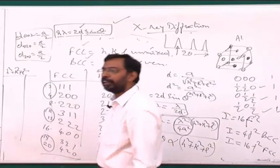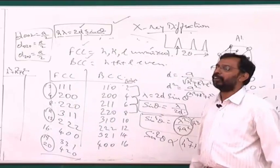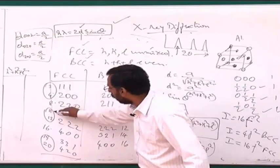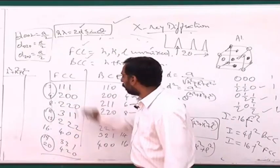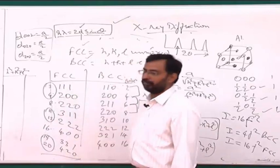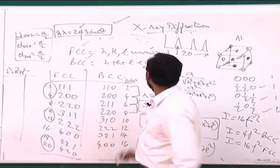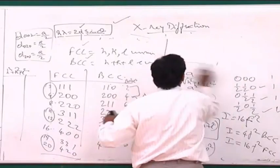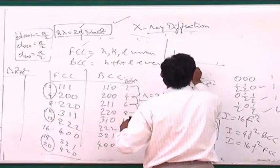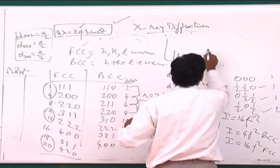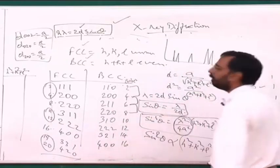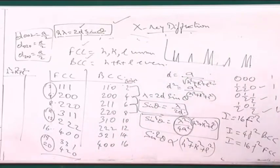If the ratio of sin²θ for the second peak to the first peak is 4/3, then the sample is FCC. If it is 2, we tentatively consider BCC, but we need to confirm further. If the ratio is not 4/3, it is definitely not FCC. We will continue this analysis in the next class to find out how to determine the crystal structure for other structures as well. Thank you.